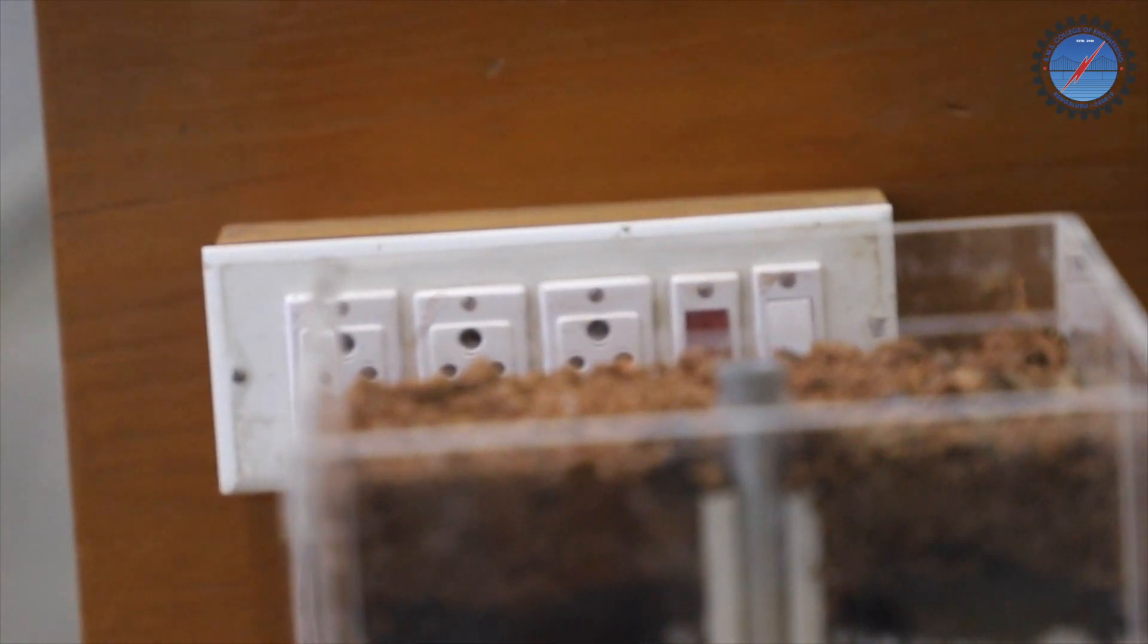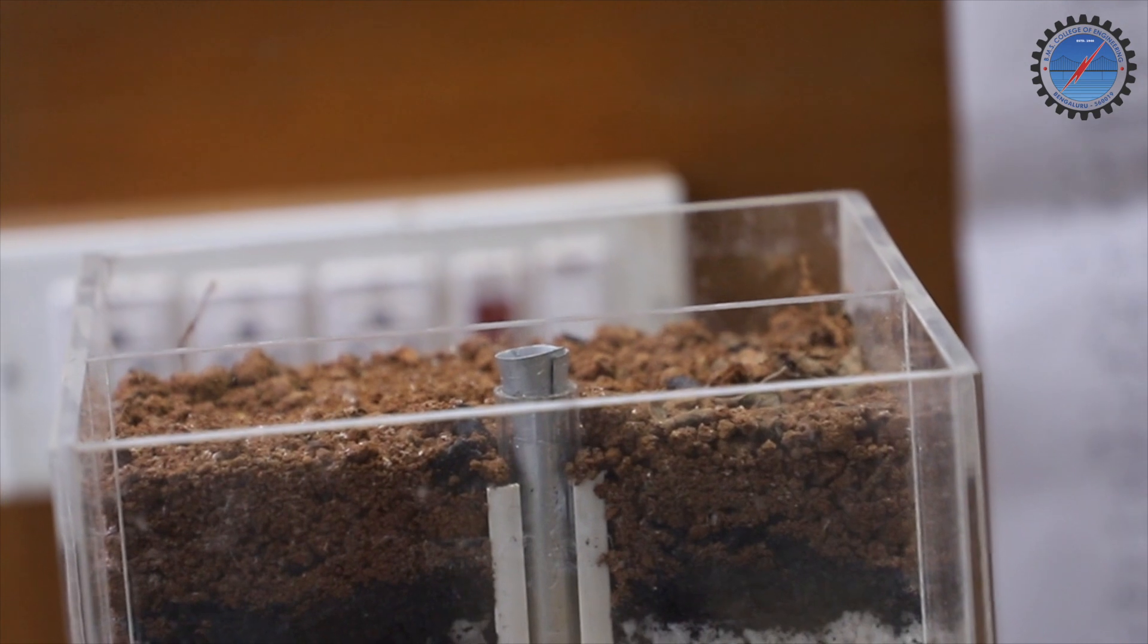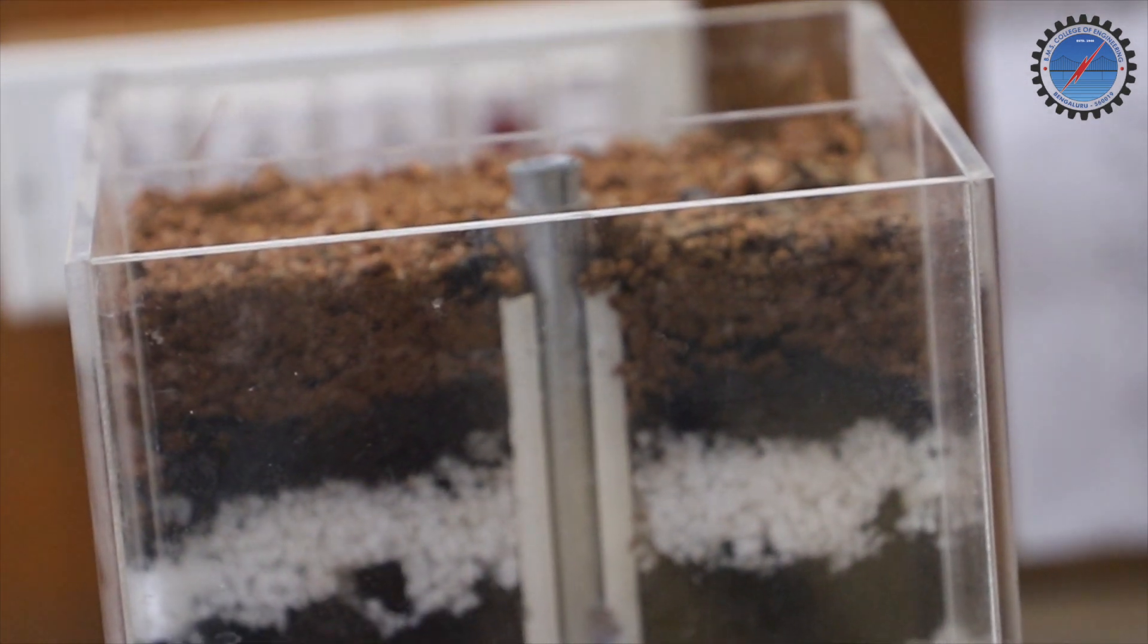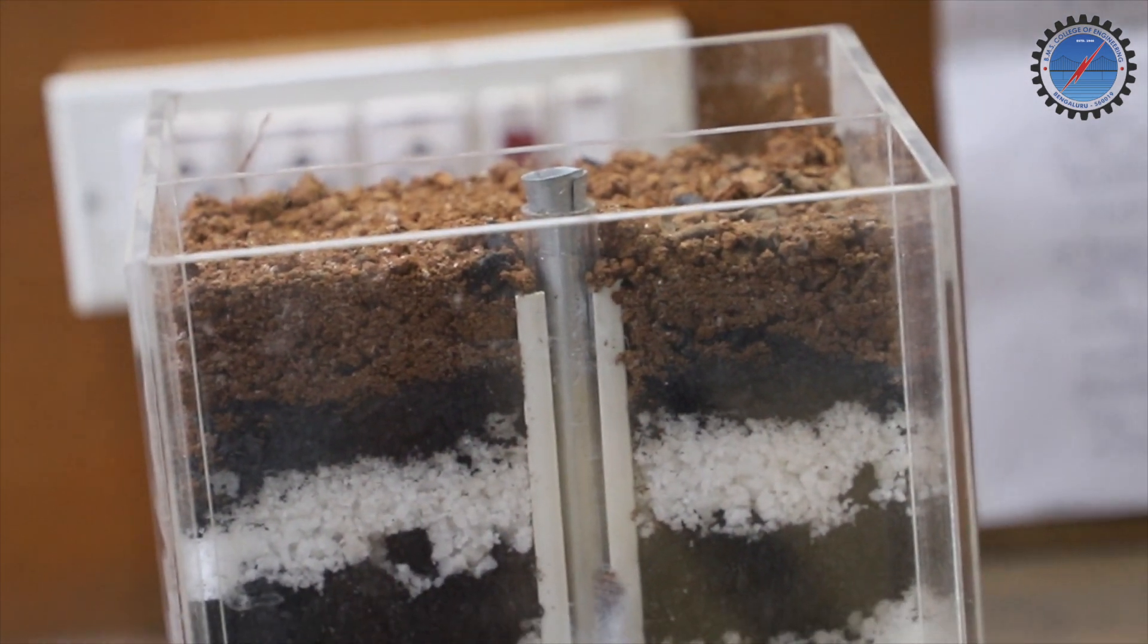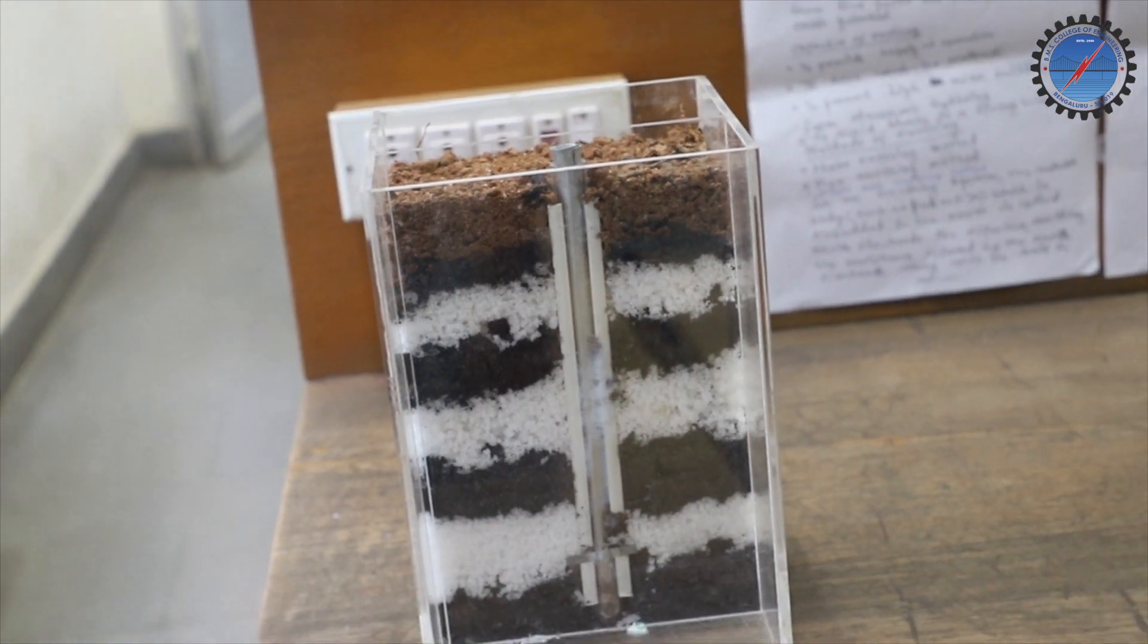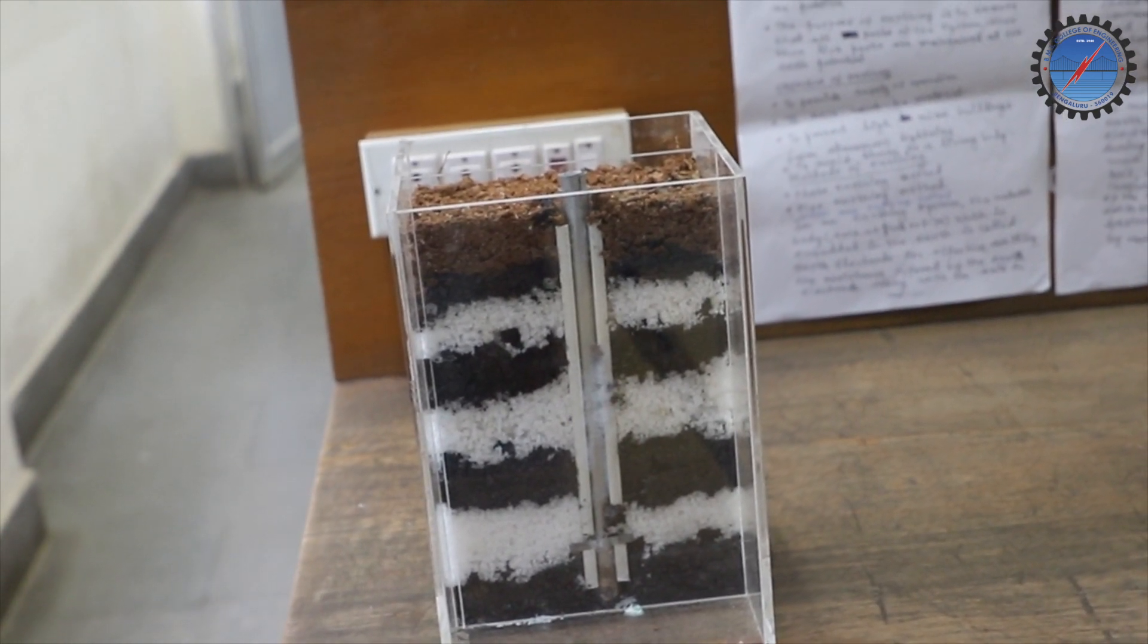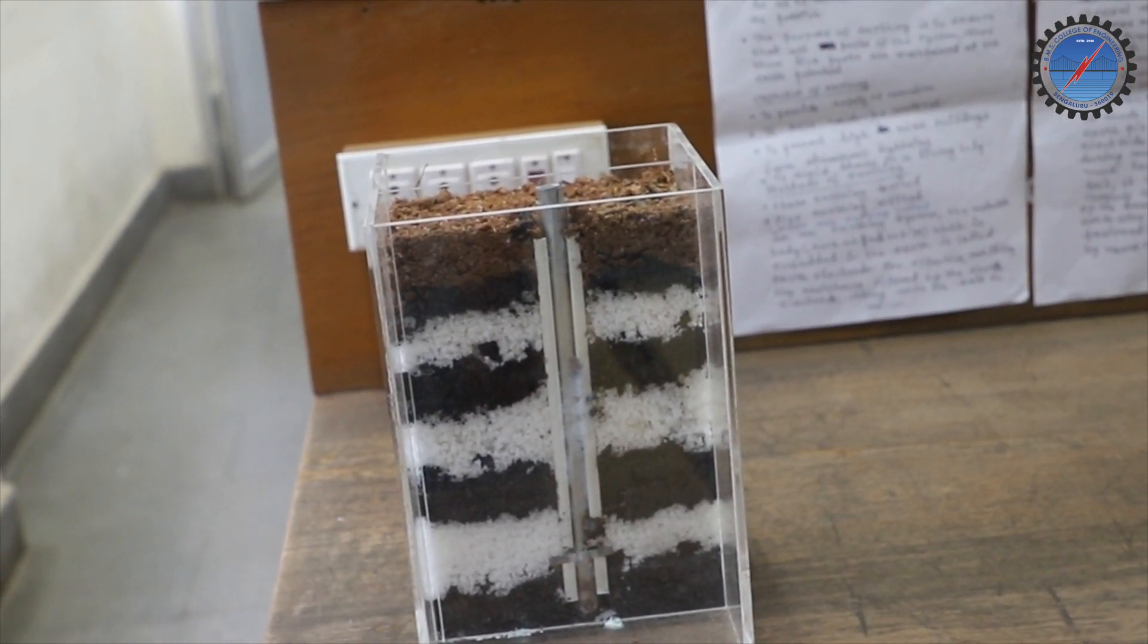For effective earthing, the resistance offered by the earth electrode along with the soil in which the electrode is embedded should be quite low. So normally we will use GI, galvanized iron material, or copper to make the earth electrode.